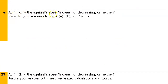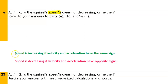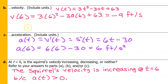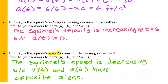At t equals 6, is the squirrel's speed increasing, decreasing, or neither? Here is a crucial relationship: speed is increasing if velocity and acceleration have the same sign, and speed is decreasing if velocity and acceleration have opposite signs. Looking back at Parts B and C, the velocity at t equals 6 is negative while the acceleration at t equals 6 is positive — they have opposite signs. Therefore the speed is decreasing. The squirrel's speed is decreasing because v(6) is negative and a(6) is positive.